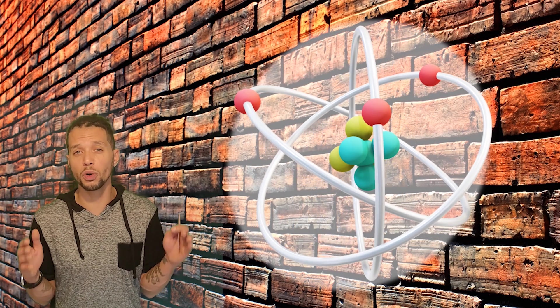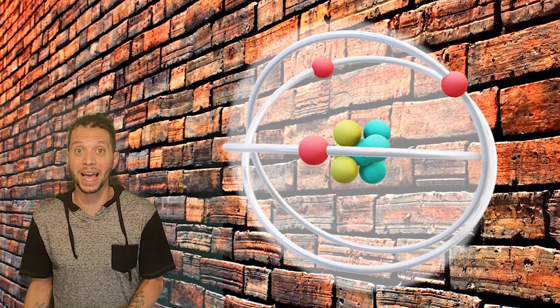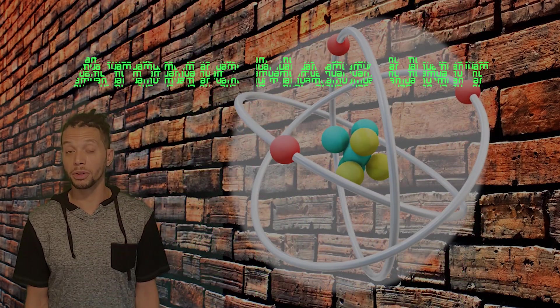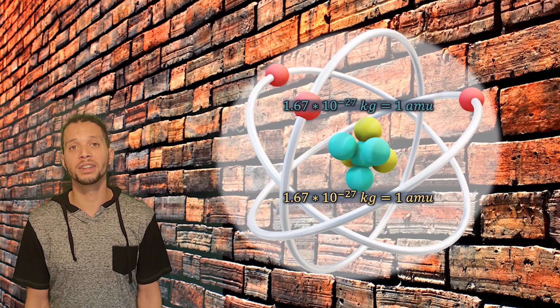Now, subatomic particles are so small that they were even given their own unit of mass, which is known as the atomic mass unit or AMU. The literal mass of both a proton and a neutron is 1.67 times 10 to the minus 27 kilograms, or we just use one atomic mass unit.